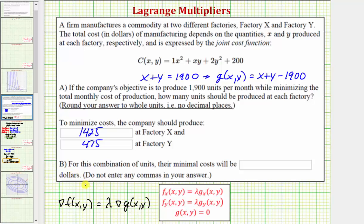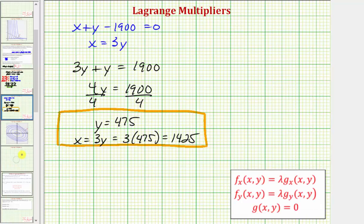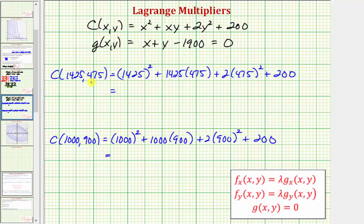Let's first answer part b by determining the cost at this production level, which means we want to determine C of 1,425 comma 475. So C(1,425, 475) comes out to 3,158,950 dollars. Again, just to select another point that would satisfy the constraint, let's evaluate the cost function at C(1,000, 900). This actually comes out to 3,520,200. So this is going to be the minimum cost given the constraint.